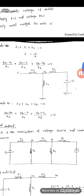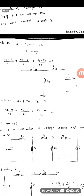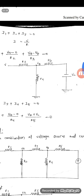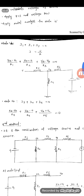Similarly, applying the nodal analysis at node B. Again you have to redraw the circuit consisting of only the elements connected to node B. Again I am considering all the currents are leaving from the node. That is I3 + I4 + I5 = 0.